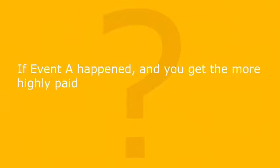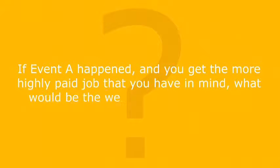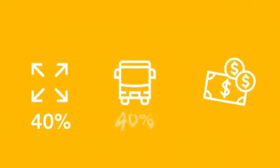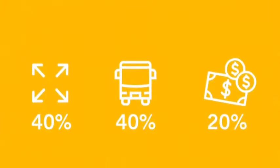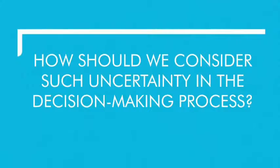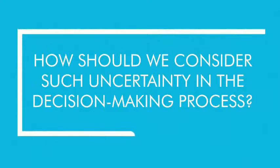Now you need to answer this question: if event A happened and you get the more highly paid job, what would be the weightings of the criteria? Let's say if this happens, the weightings of importance for size, accessibility, and price will become 40%, 40%, and 20%. The case becomes interesting because you now have two different sets of weightings depending on what may happen in the future. The question is: how should we consider such uncertainty in the decision-making process?